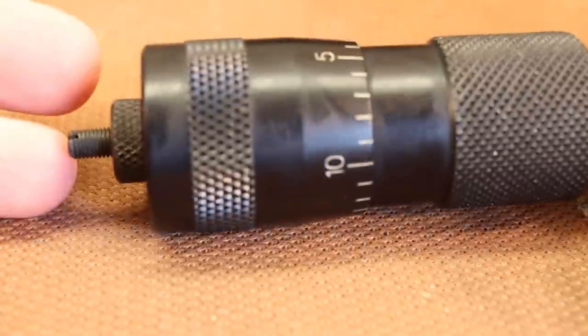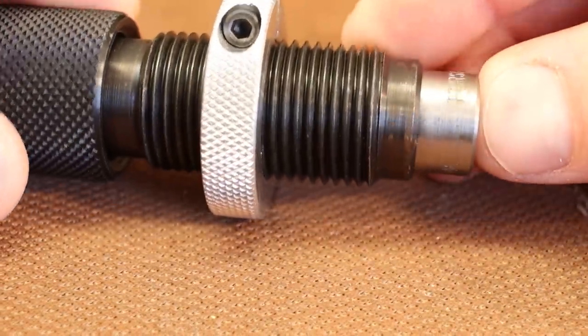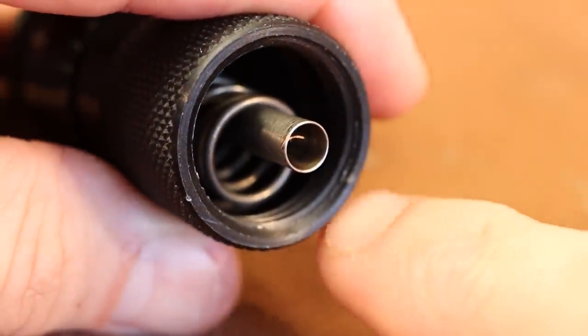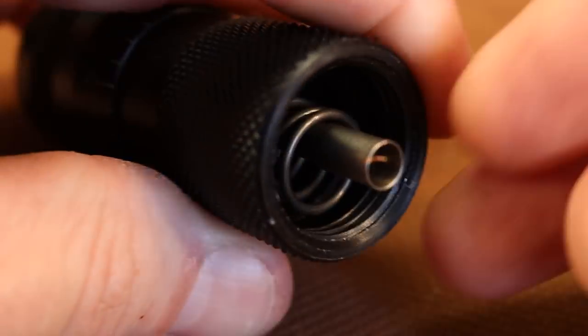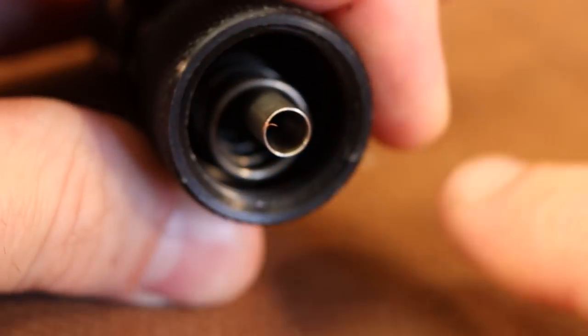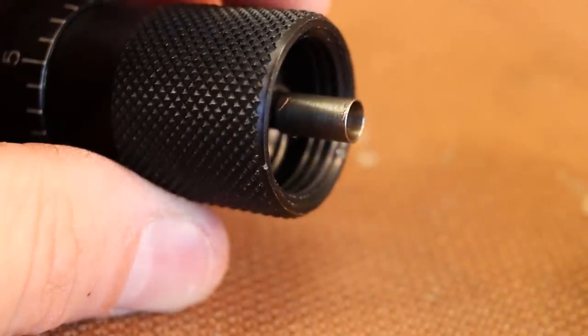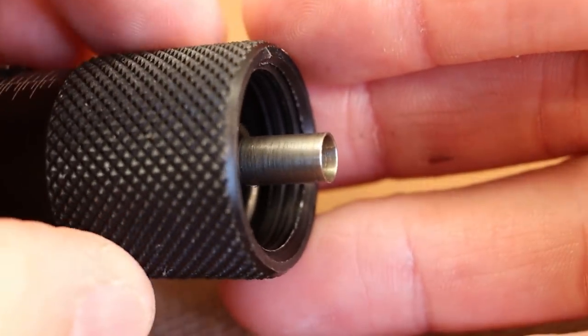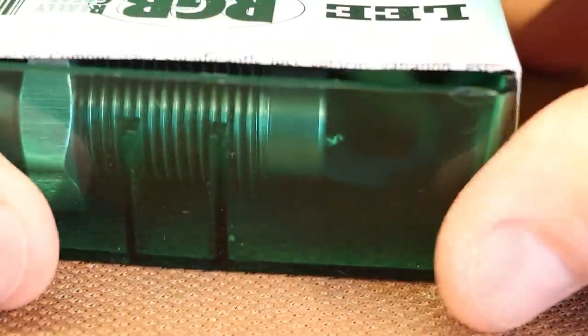The one I used in the last video for most loads was this Forster ultramicrometer seating die. I love these dies, but I've had issues with a couple of these stems cracking because you can see how thin they are. If you start shooting compressed loads, you can crack these guys pretty easy. I actually think this one is cracked somewhere, but it was good enough to give me the best consistent seating in that last video.